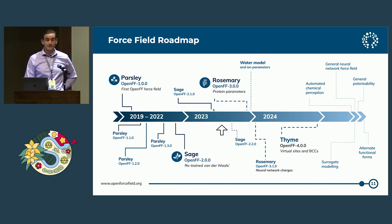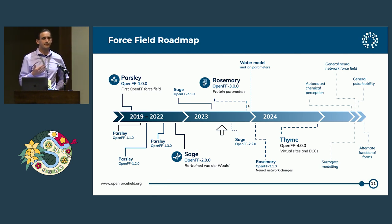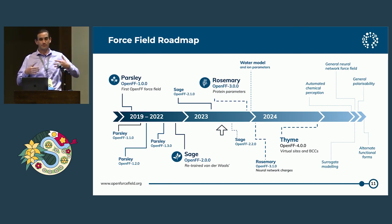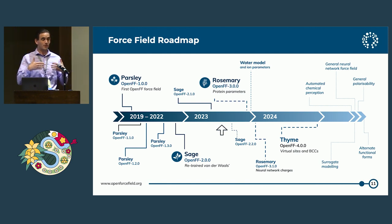Just a few months ago, we released Sage 2.1.0, which fixes some deficiencies that our partners had pointed out with Sage 2.0. Our next release is going to be Rosemary, and that's going to be a single force field that handles both small molecules and proteins. This is important because people right now have to mix and match — you pick your protein force field, you pick your small molecule force field — and all these permutations give you different numbers. By training a protein and small molecule force field into one single model, we're hoping to get a self-consistent force field that gives accurate results.